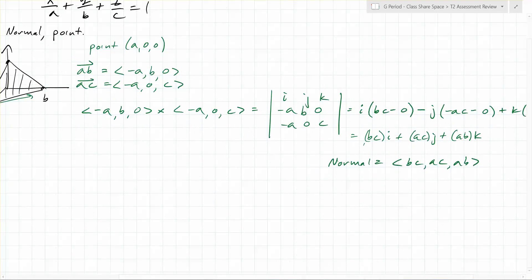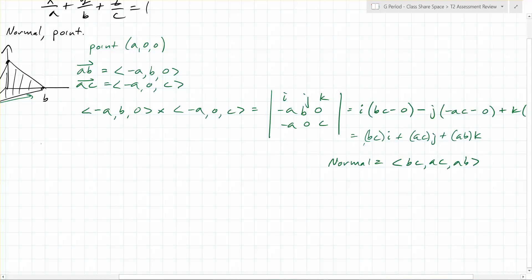Exactly. So what do we do with that? We plug it into our equation, which is: bc times (x - a) plus ac times (y - 0) plus ab times (z - 0) equals 0.